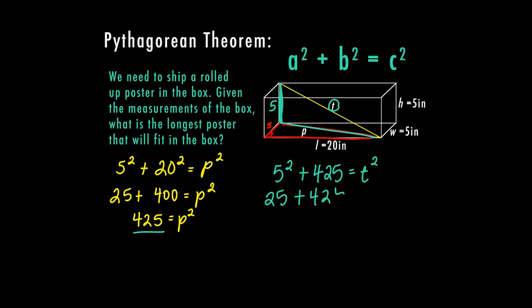So now I can solve this. 5 squared is 25. 25 plus 425 is 450. And my last thing is to square root both sides. So T is going to equal, and in this case, this is not a perfect square. So I'm going to go to my calculator. And when I plug this into the calculator, I end up with 21.2 rounded to the nearest tenth. So that means that the longest rolled poster I can fit in this space where the T is, would be a 21 inch poster. If it's any longer than 21 inches, it's not going to fit in that space.